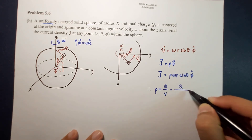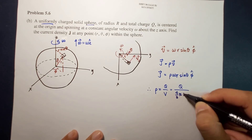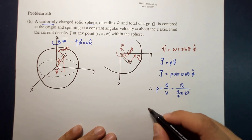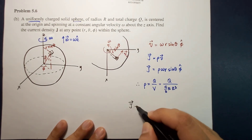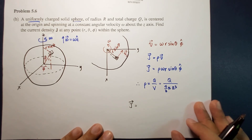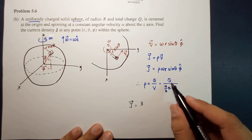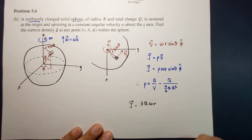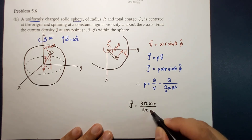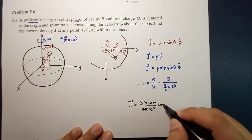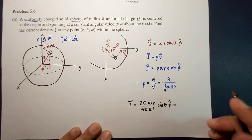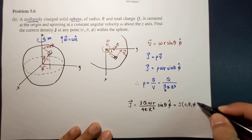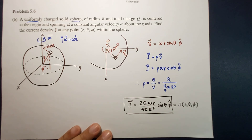Therefore, rho is equal to Q over four-thirds pi R cubed. So therefore the final answer would be: J is now equal to 3Q omega r divided by four pi R cubed, times sine theta, phi hat. You will notice that J is now a function of r, theta, and phi. Simple, right?